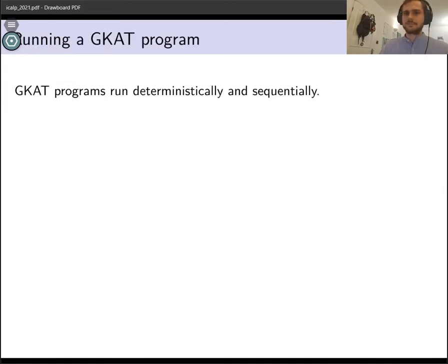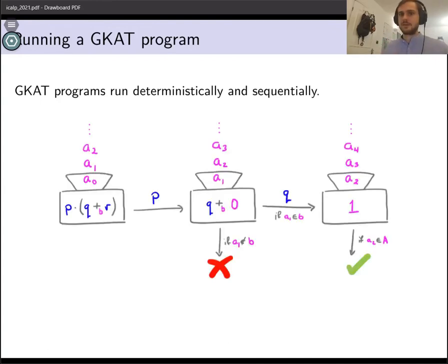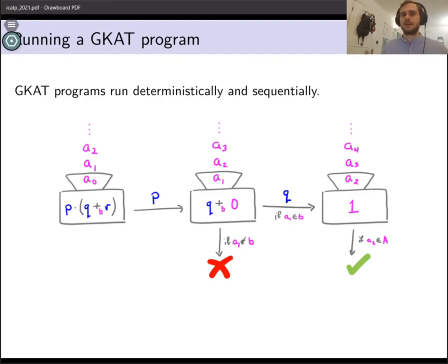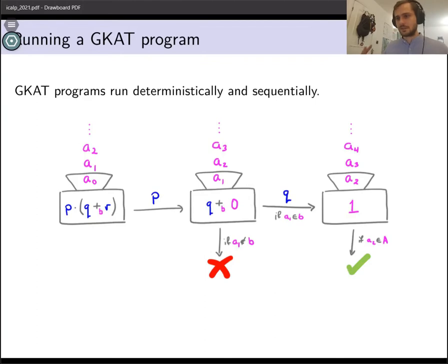So how do we run a GCAT program — what do these programs mean? GCAT programs run deterministically and sequentially. They do so by reading a stream of atomic tests and reacting by either performing an action and moving on to the next state, or by failing and entering deadlock. They can also terminate successfully.